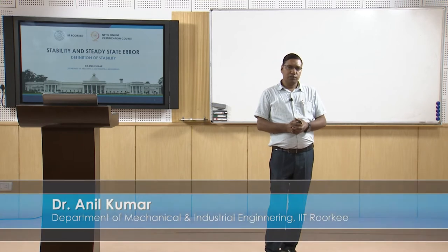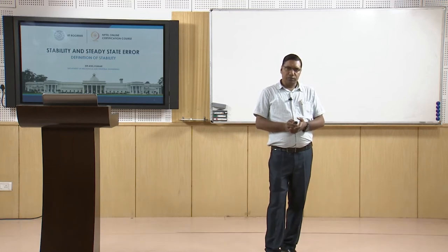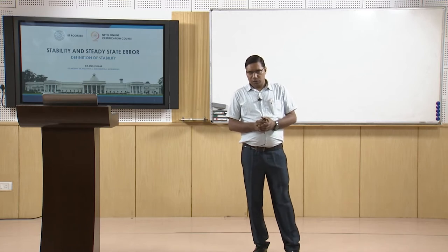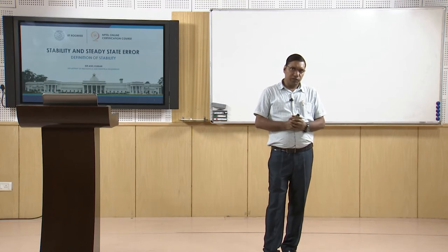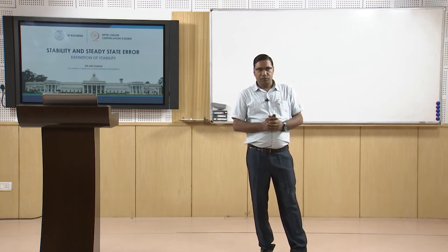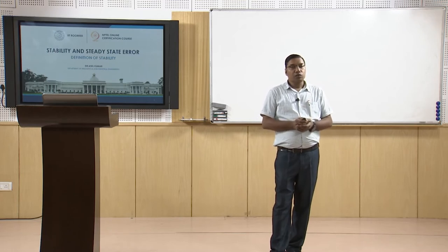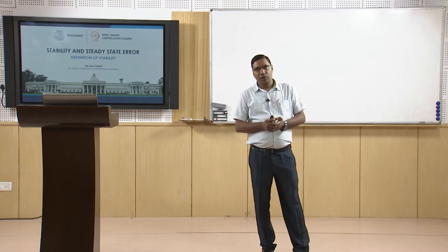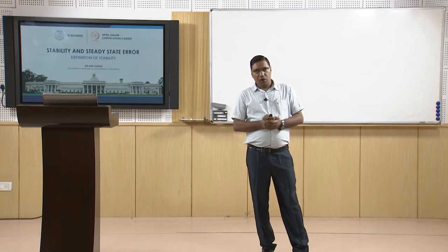Welcome to the lecture on stability and steady-state error. In this lecture we will discuss stability. We know that there are three requirements for the design of a control system: transient response, stability, and steady-state errors. These are the design objectives we must satisfy according to our requirements when designing or modifying a control system. We discussed transient response already in the previous week's lecture, and now we will discuss stability.